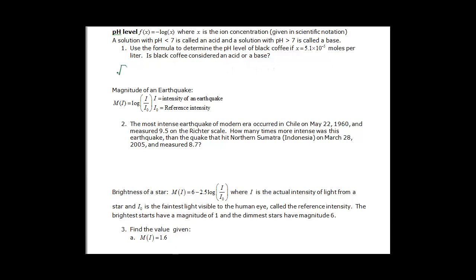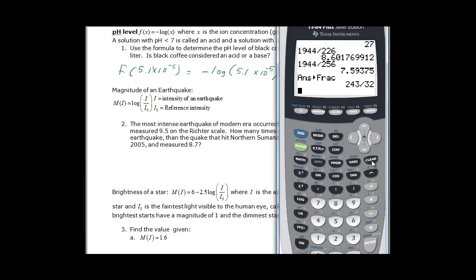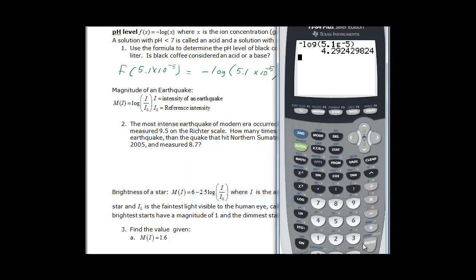So we want to do f of 5.1 times 10 to the negative 5, and that's going to be equal to the negative log of 5.1 times 10 to the negative 5. Using our calculator, we need to get out of this mode and get into our regular screen. We want negative log and we're going to plug in 5.1, and then second comma says ee on the top. That's one way to write exponential. Then all you have to put here is the exponent to the negative 5th, close the parenthesis, and we find out that it is 4.29.